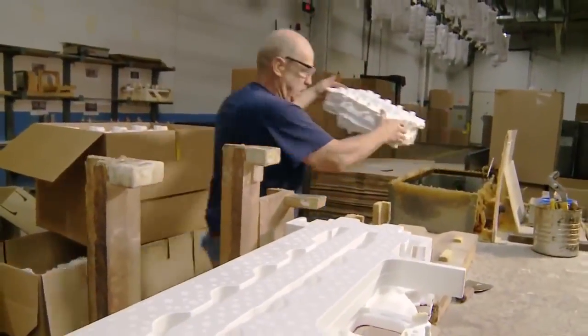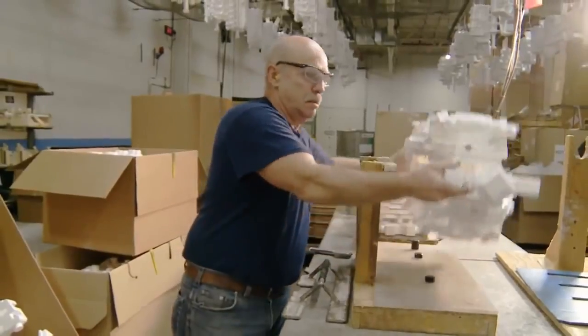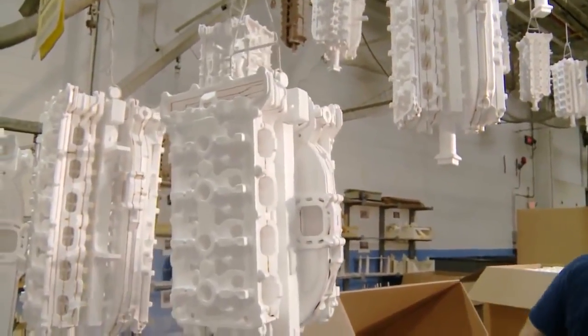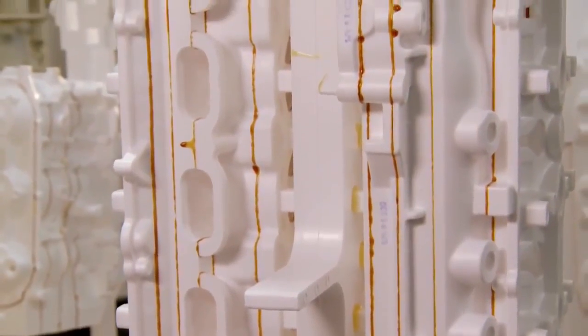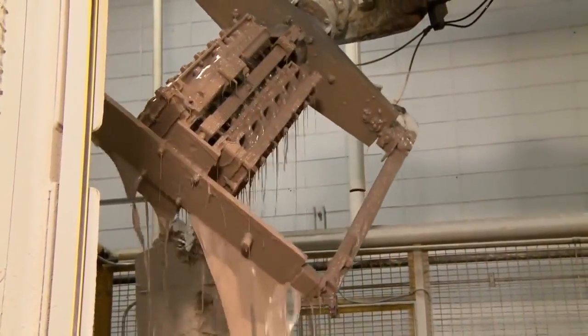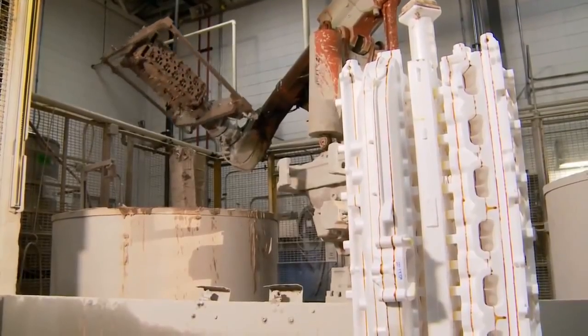Styrofoam molds are glued to a frame so multiple pieces of the same part can be cast simultaneously. The form, like every part, is stamped with a serial number that can be tracked from here all the way to the transom of your boat. The patterns are dipped in an exclusive coating that creates a barrier between the foam and the synthetic sand used during the casting process.